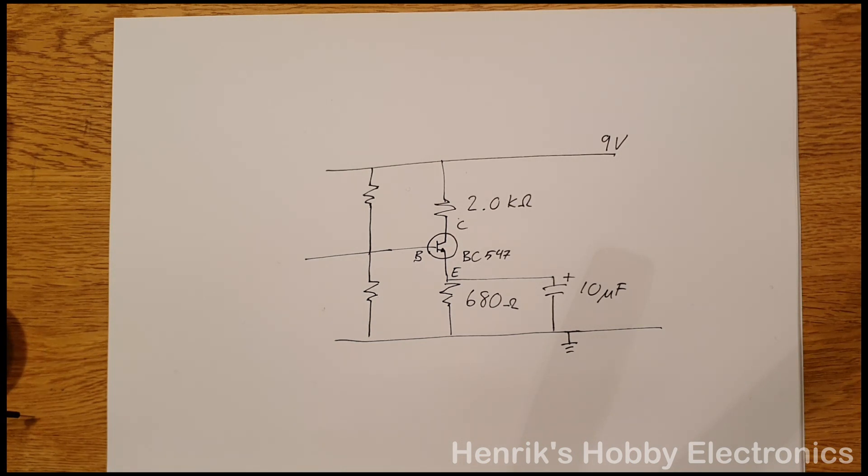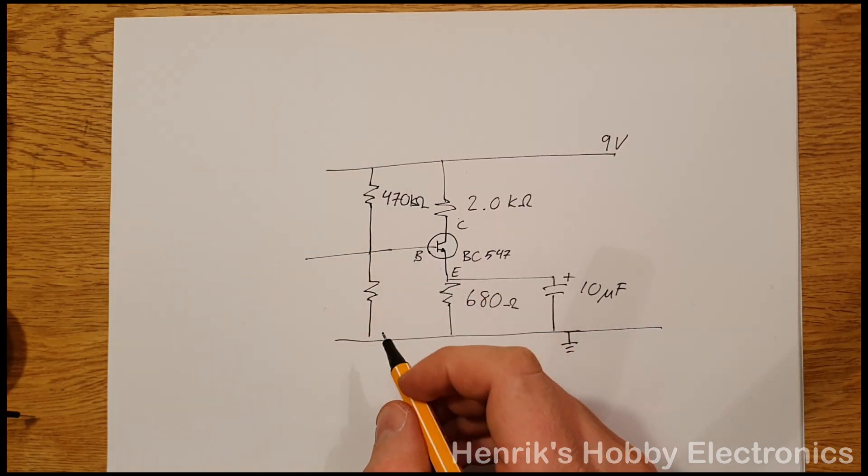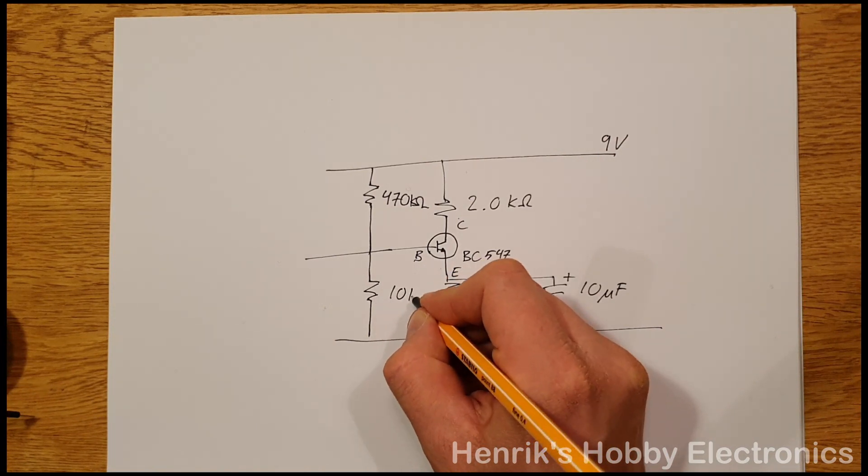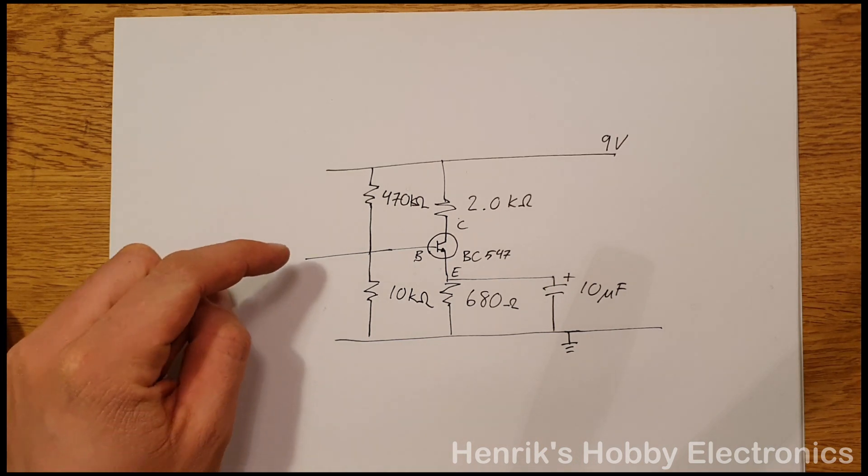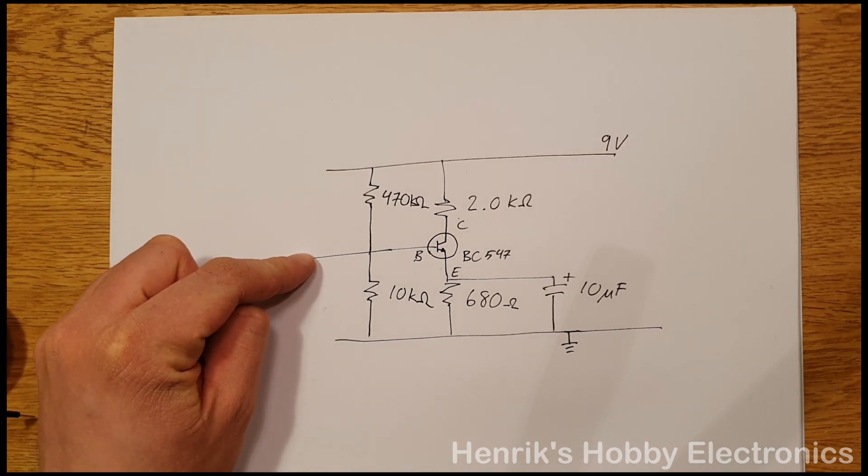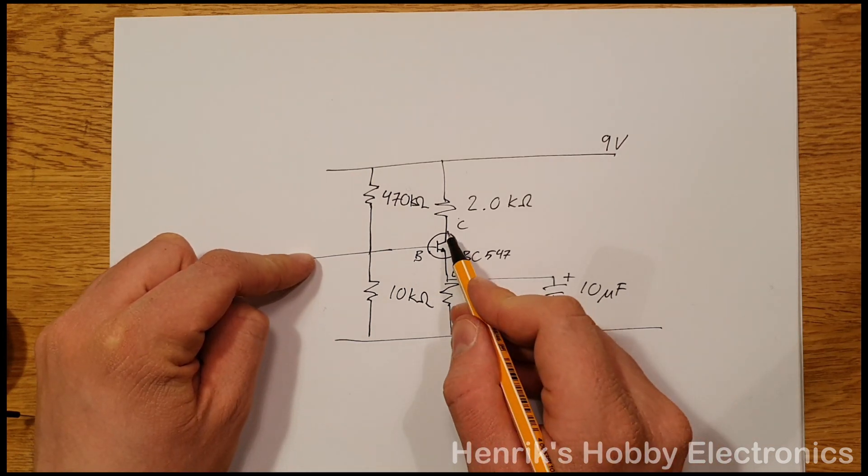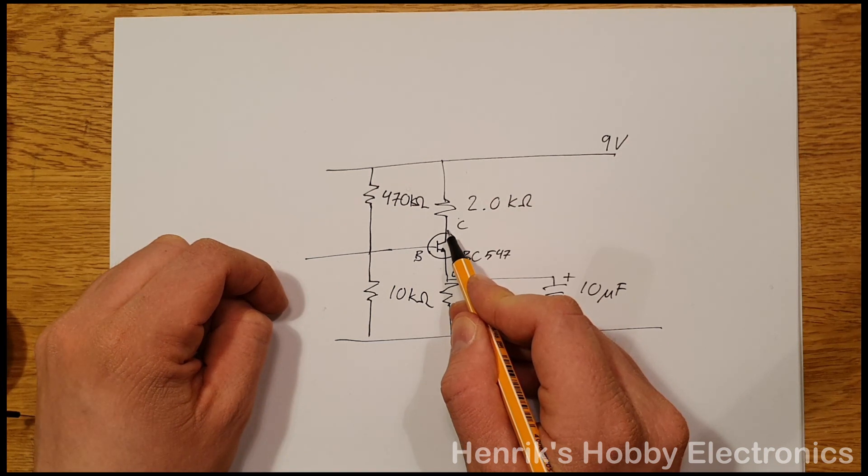So for those of you who are interested in learning how we actually calculate what resistance values we should use here, I will leave some references down below that you can have a look at. In this example we'll use 470 kilo ohms here and we'll use 10 kilo ohms here. This means that when we apply an input signal here, this will control the current and voltage here at the collector side of the transistor.